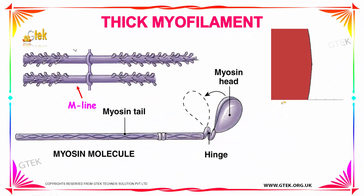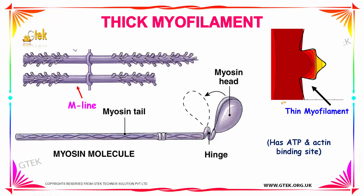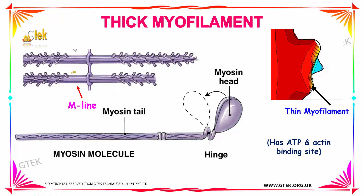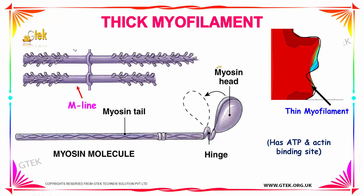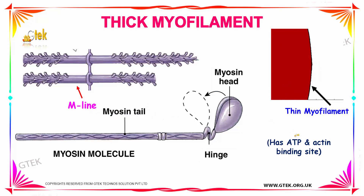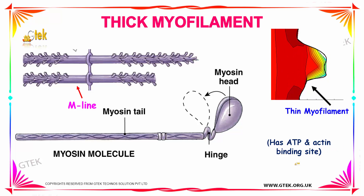Next we are going to see the thick myofilament. The microscopic structure of your thick myofilament looks like this — a portion enlarged to show its detail. You have a part known as the myosin head, which can move forward and backward by a hinge, and the other portion of your myosin molecule is the myosin tail. Your thick myofilament has ATP and actin binding sites.